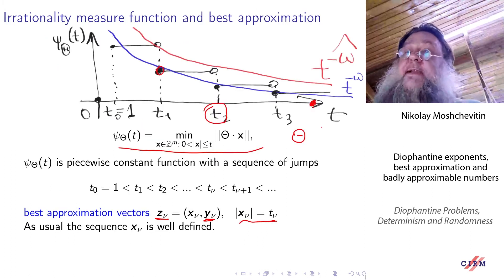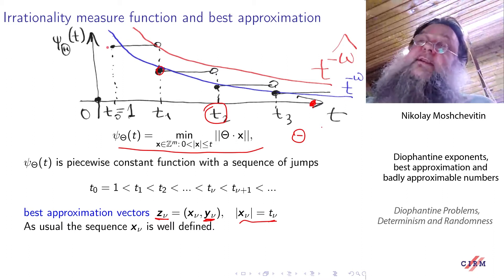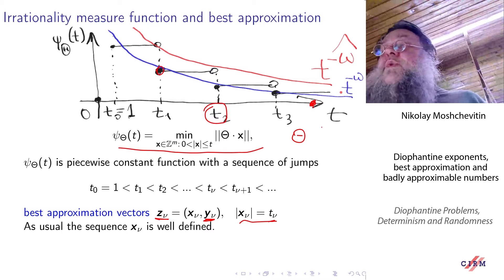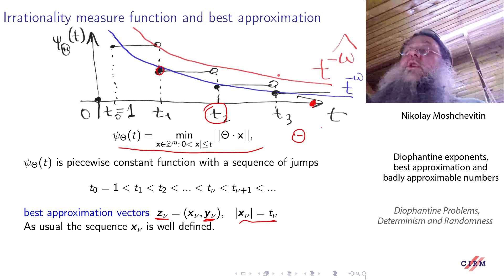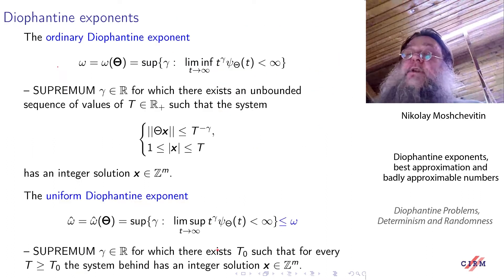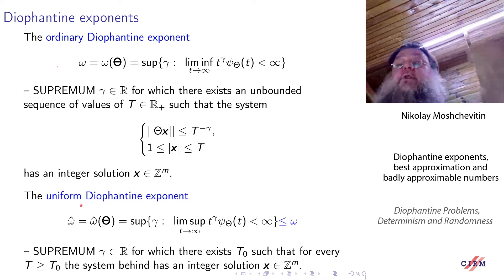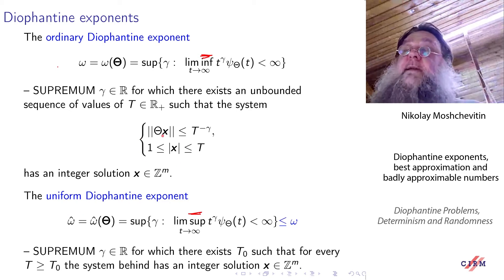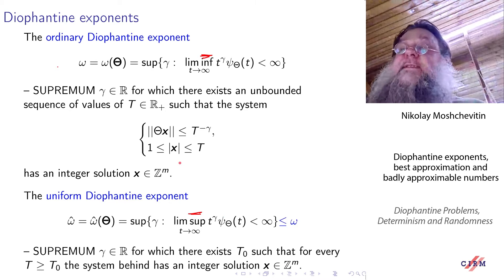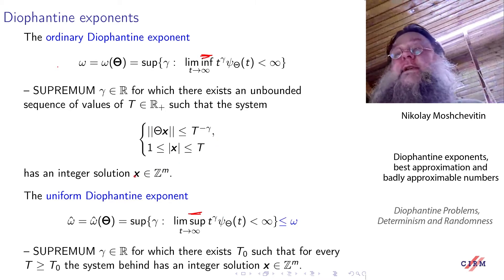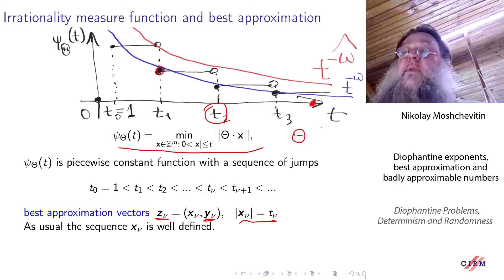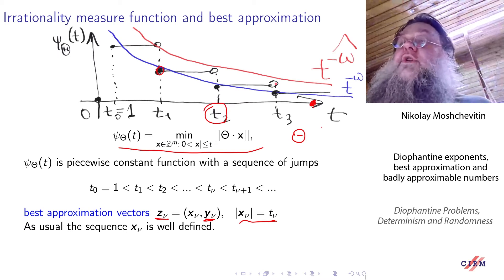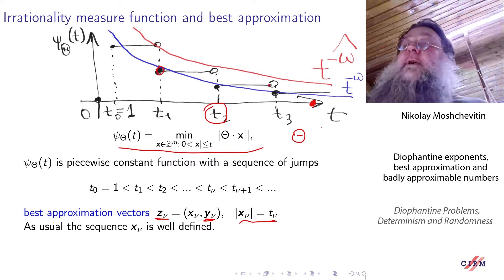It means — going back to my previous slide — that omega means something like this: we draw this blue curve and infinitely often these black points go below the curve t^{-γ}. And omega-hat, which is called the uniform exponent, is defined in a similar way, but here instead of lim-inf we have lim-sup. It means that omega-hat is the supremum of gammas for which this system has solutions in integer x for all sufficiently large t. On my previous slide it means that these points with empty interior lie behind this red curve.